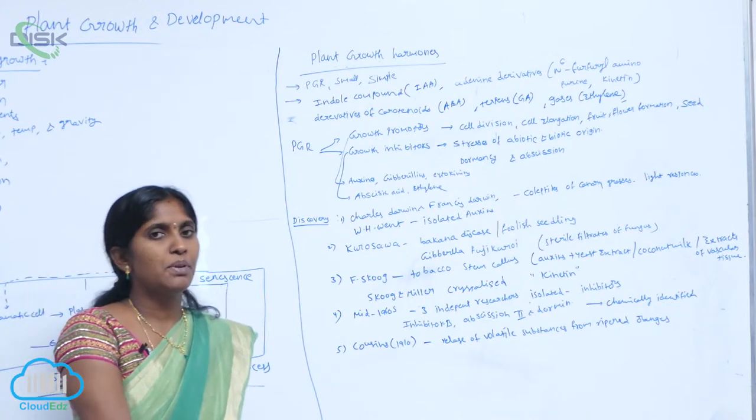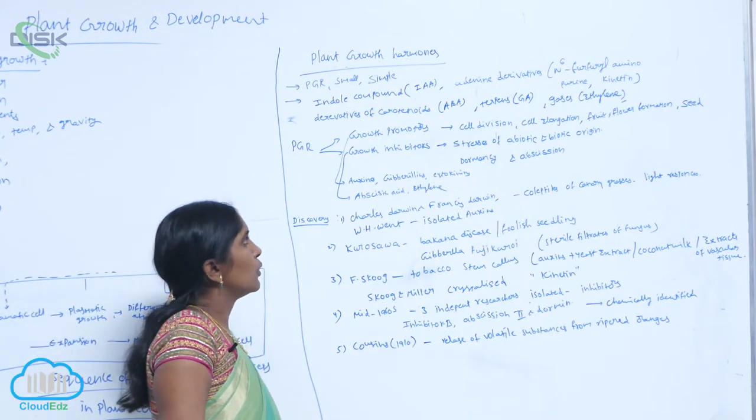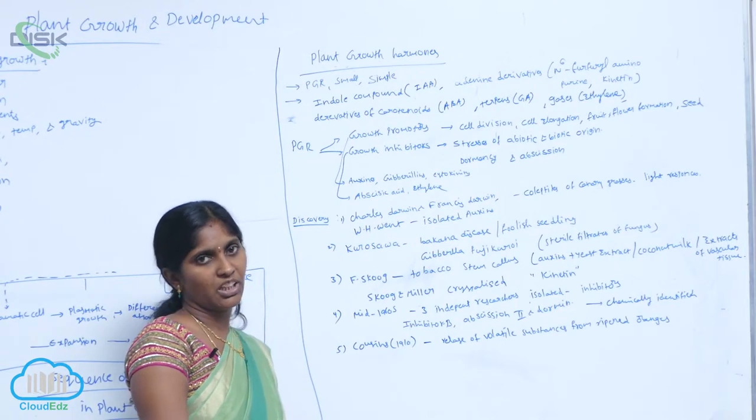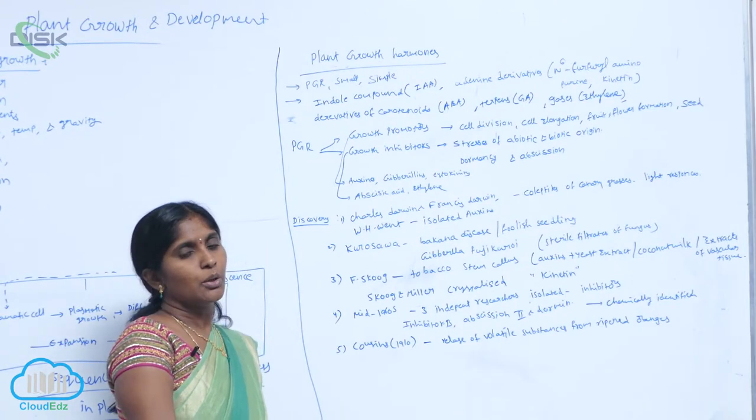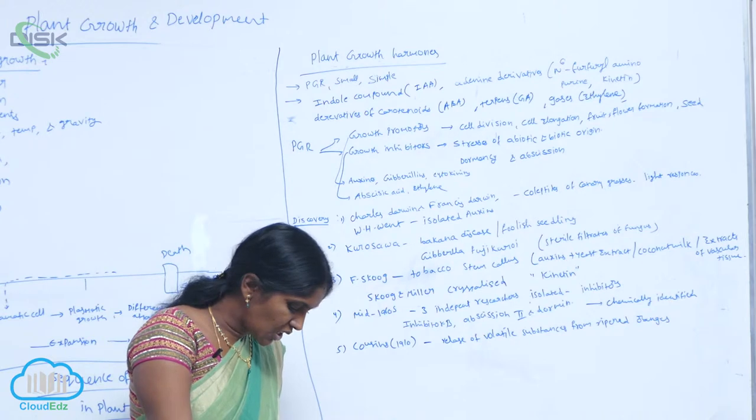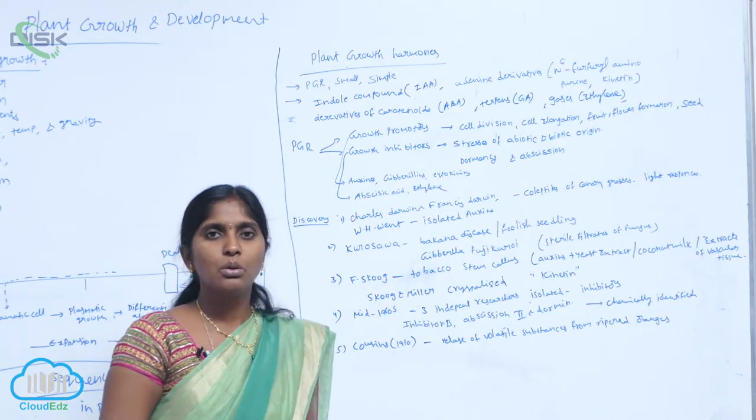PGRs are divided into two types: growth promoters and growth inhibitors. Growth promoters cause the growth. What is growth?